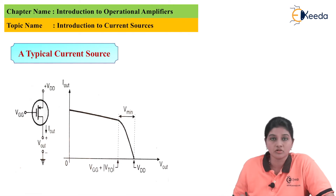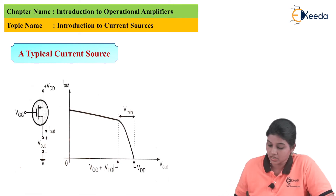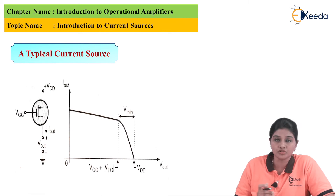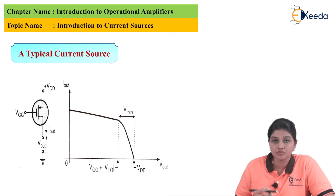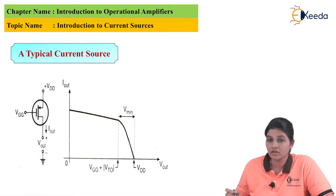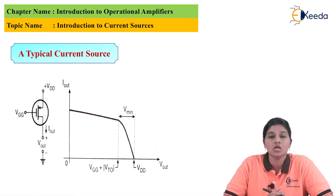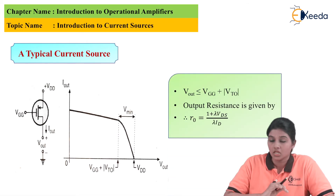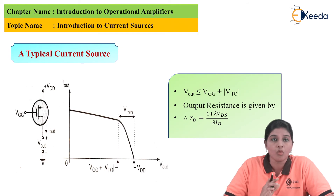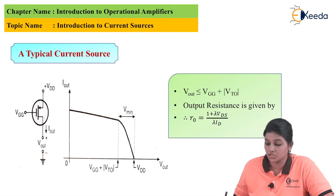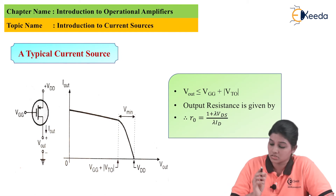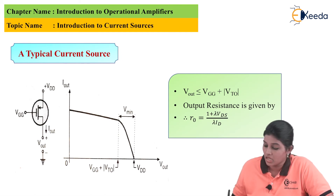If we look at the typical current source, we will come to know that the gate terminal is connected to the constant voltage that is VGG, and the graph shows variation of output and input current and voltage. This circuit will provide the output only when it satisfies the condition that Vout should be less than VGG plus VTO, and the output resistance is given by (1 + λ·VDS) / (λ · ID).